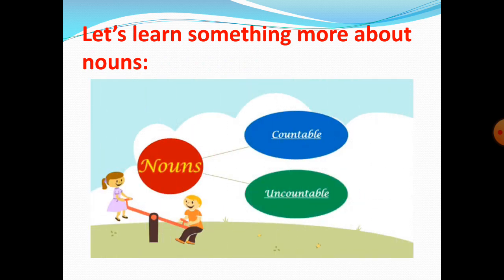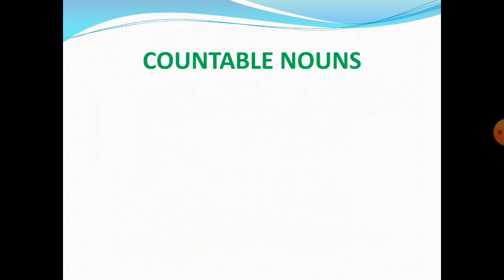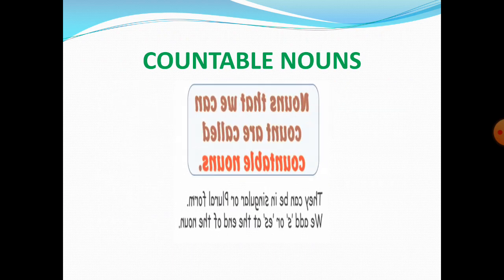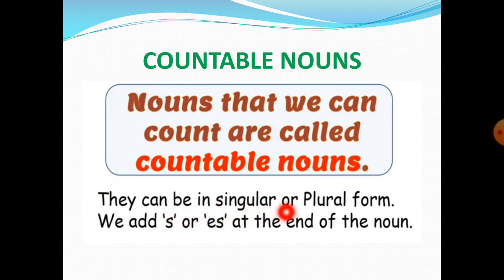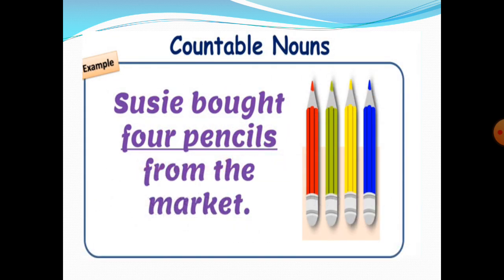Nouns can be countable and uncountable nouns. Now let us see what are countable nouns. They can be in singular or plural form. We add S or ES at the end of the noun. Now let's see some examples of countable nouns.